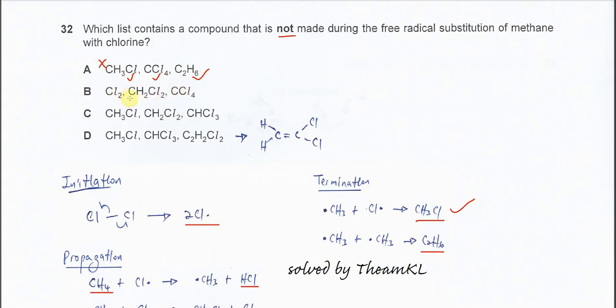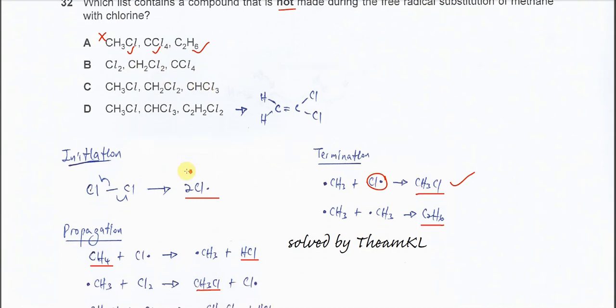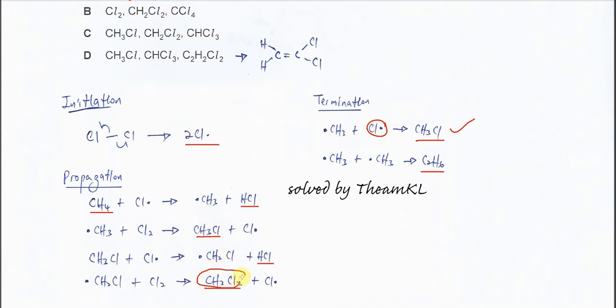Chlorine also can form because at termination the two chlorine radicals can combine to form chlorine, or it can form CH2Cl2, which is one of the products here in the propagation.